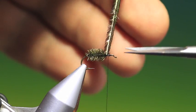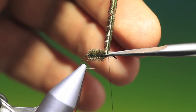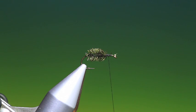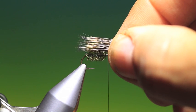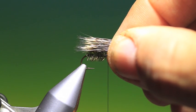So we can remove that. There we go. Now we need our elk wing. Just a small bunch, about the size of a matchstick. And once you've cleaned it and stacked it, it should be approximately the right amount. A little bit further than the length of the hook.